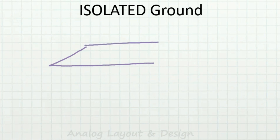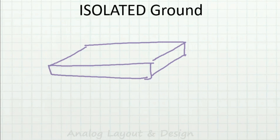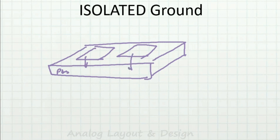In a normal P-substrate IC, if I have digital circuitry and analog circuitry on the same substrate, both ground connections go to the same substrate. Can a current flow from AGND to DGND through the substrate? Definitely yes. So in a normal substrate, the grounds are not isolated.